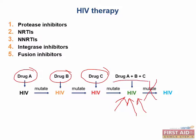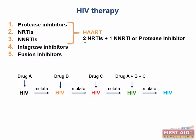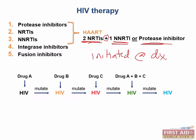By giving multiple medications with different mechanisms of action, we can kill or stop the virus from replicating before it has the ability to mutate. This concept is the theoretical basis for what is known as HAART therapy, or Highly Active Antiretroviral Therapy. HAART therapy consists of two nucleoside reverse transcriptase inhibitors plus either one non-nucleoside reverse transcriptase inhibitor or a protease inhibitor. Ideally, HAART therapy is initiated at diagnosis of HIV infection, though often therapy is not started until the patient presents with PCP pneumonia or another opportunistic infection.